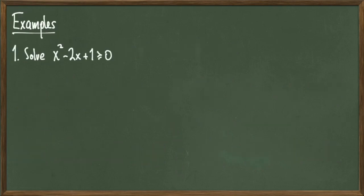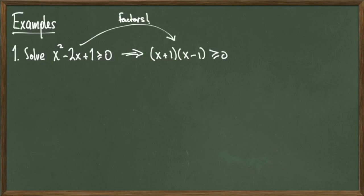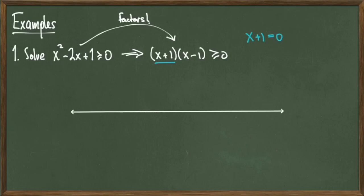We're going to solve the quadratic inequality x² - 2x + 1 ≥ 0. I want the roots of this quadratic, so I'll try factoring it into (x + 1)(x - 1). Now I can read off the roots. Since I'm solving an inequality, I'm not done yet — the roots just help us find our answer.